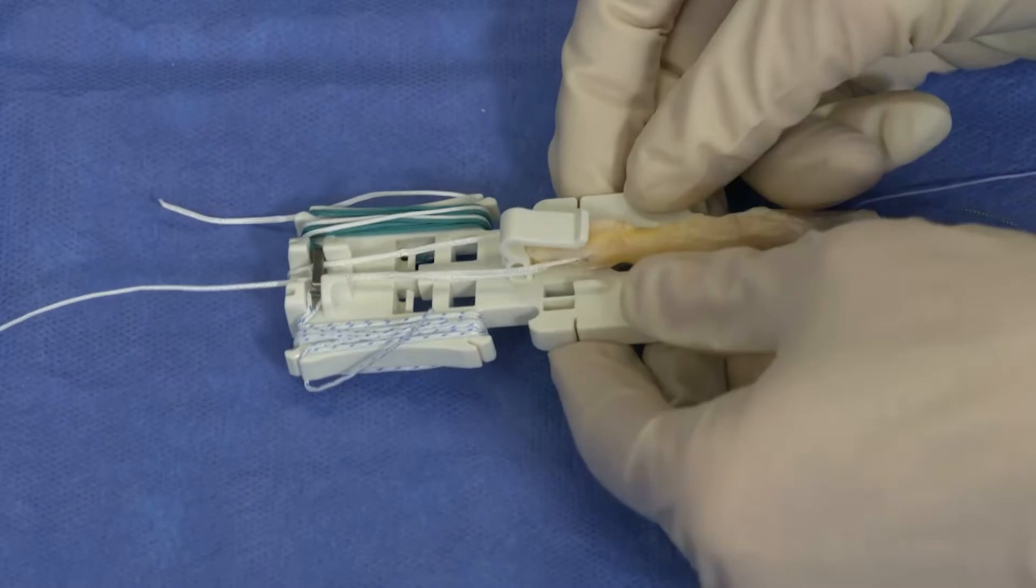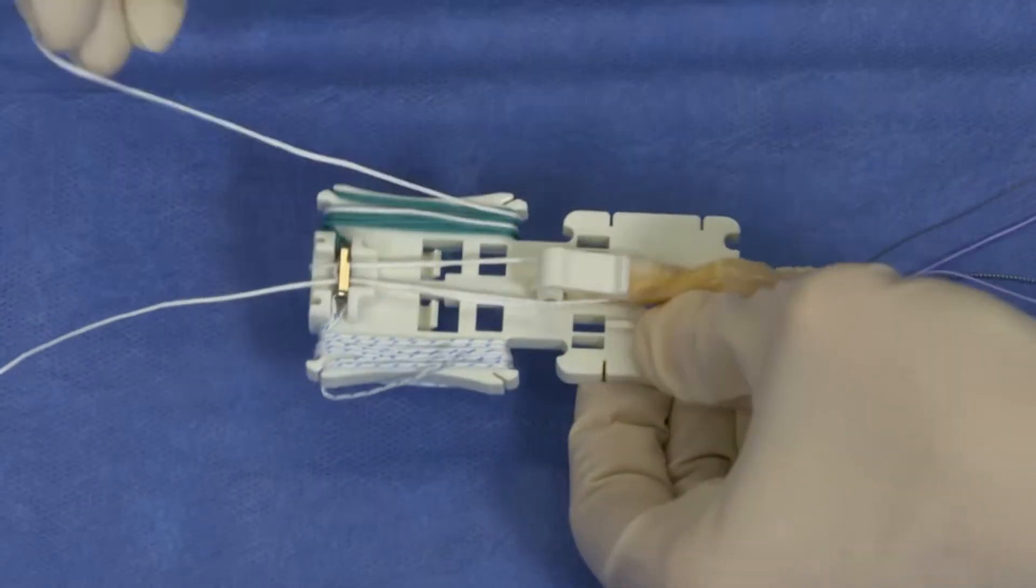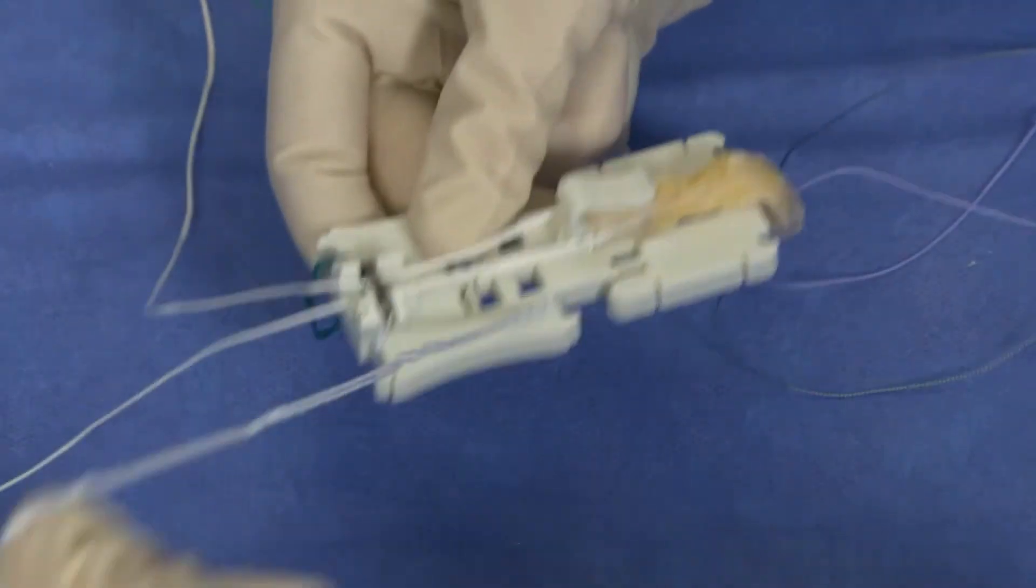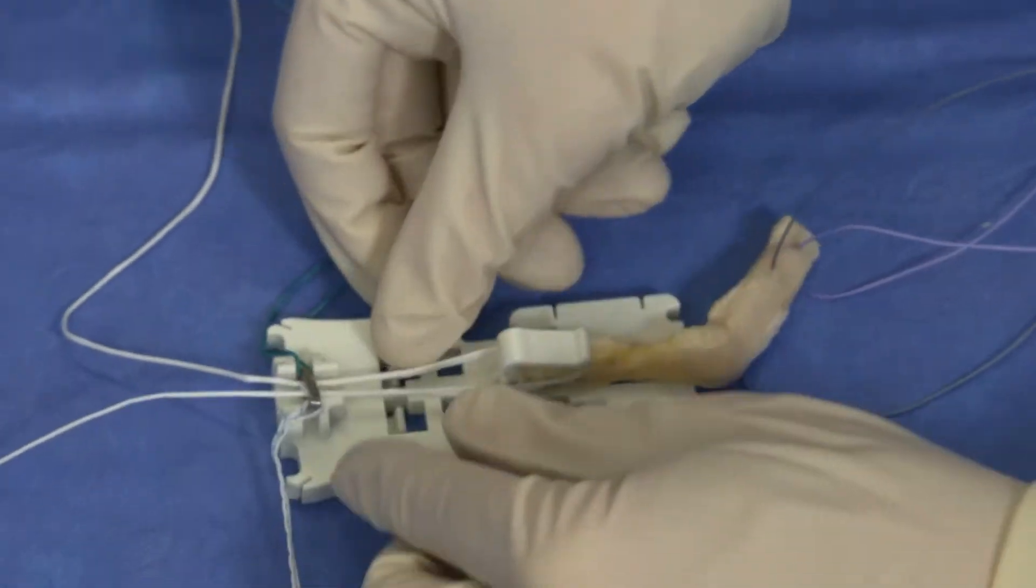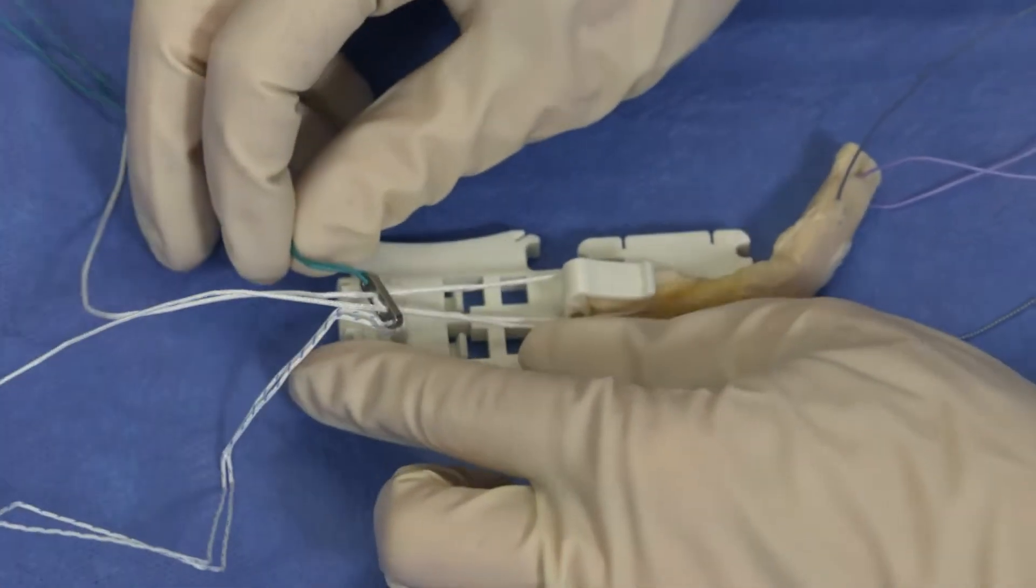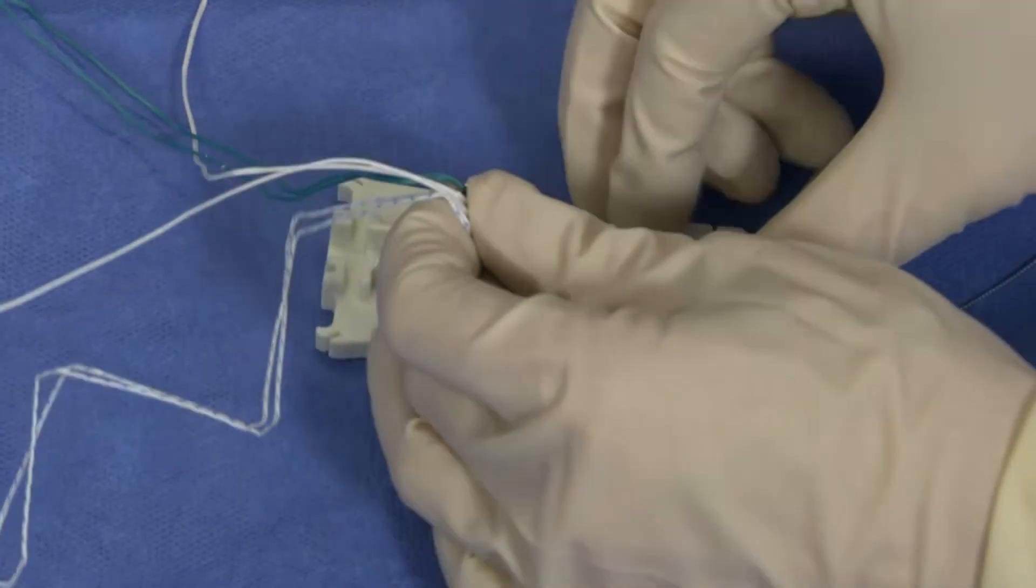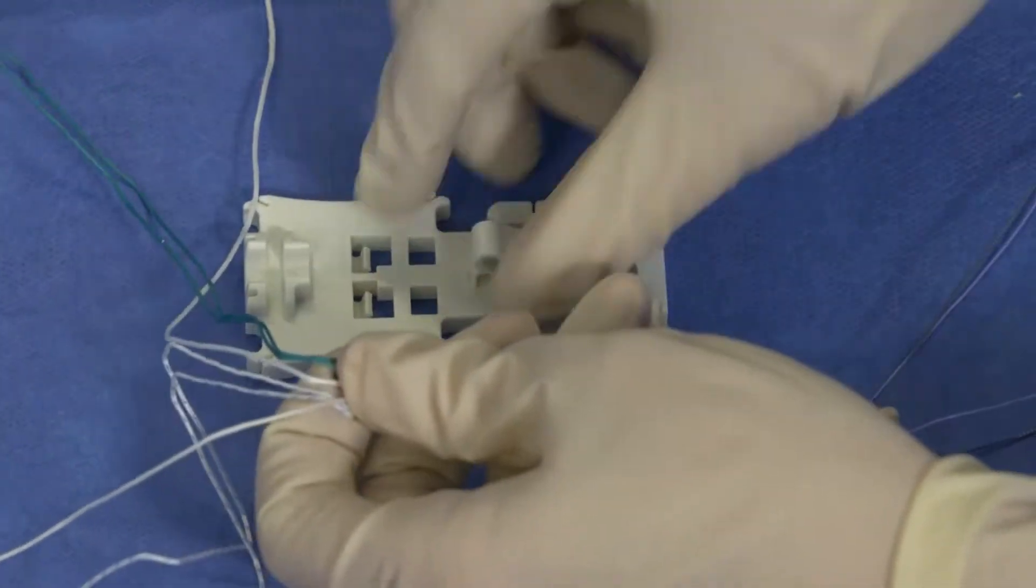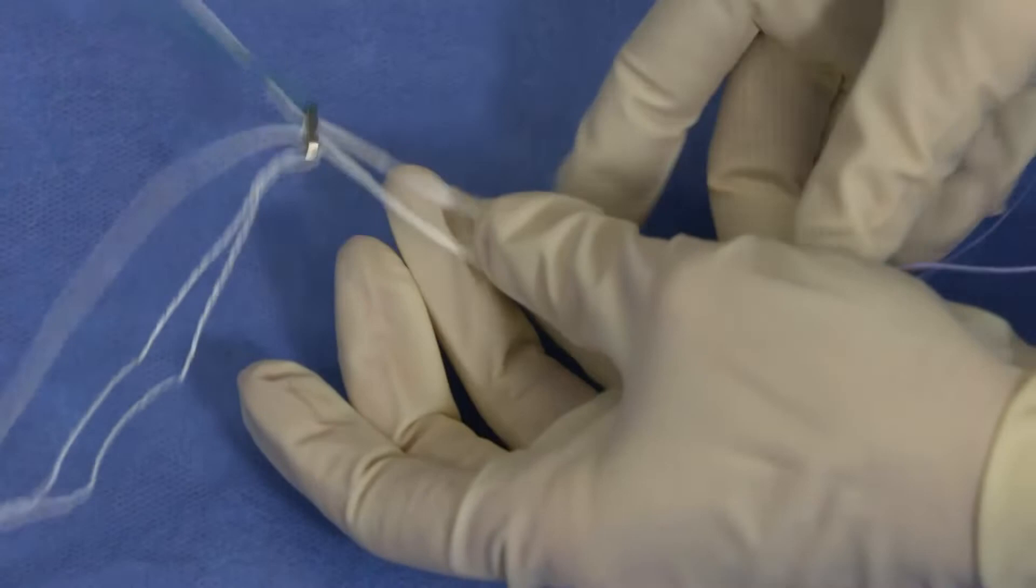The final step is unwinding the suture from the base and then you have the button in place. You release the button from the base and the graft comes out of the clamp and you have your final construct here.